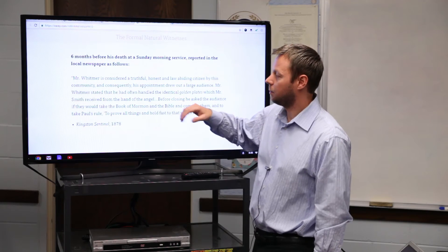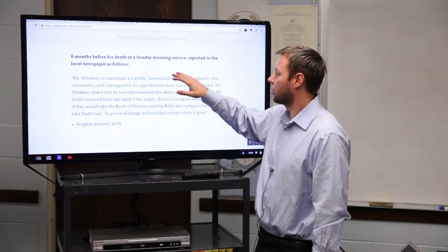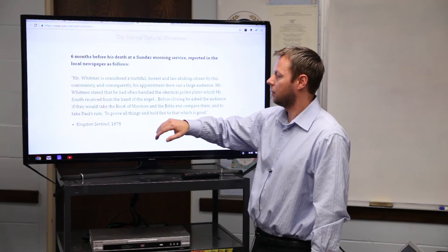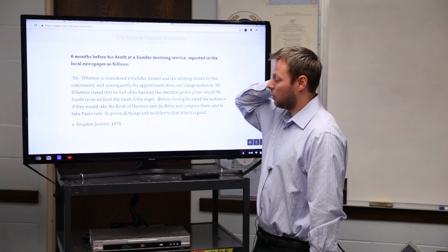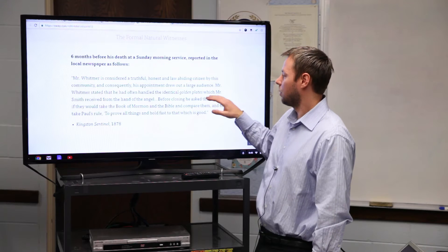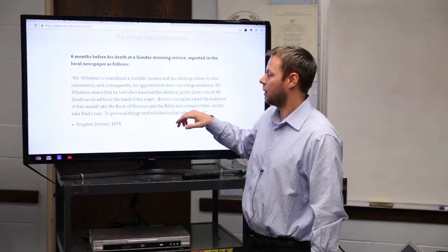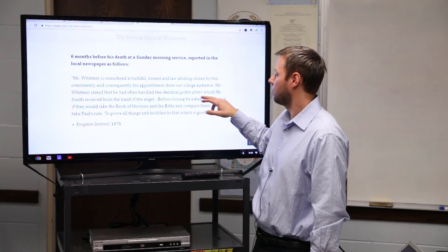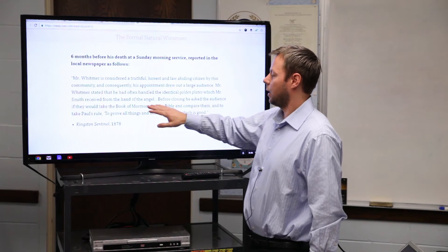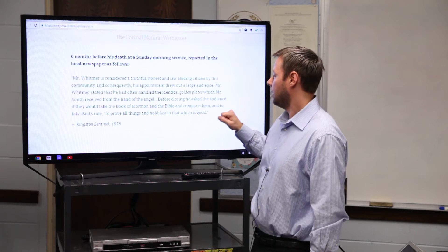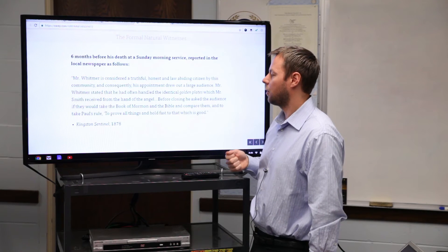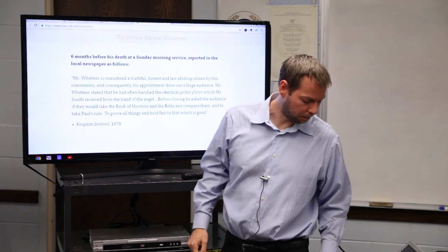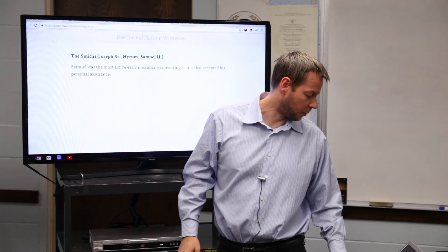Six months before his death, he preaches or teaches at a Sunday morning service. This is reported in a local newspaper, the Kingston Sentinel: 'Mr. Whitmer is considered a truthful, honest, and law-abiding citizen by this community and consequently his appointment drew out a large audience. Mr. Whitmer stated that he had often handled the identical golden plates which Mr. Smith received from the hand of the angel. Before closing, he asked the audience if they would take the Book of Mormon and the Bible and compare them and to take Paul's rule to prove all things and hold fast to that which is good.' So this is just six months before his death.